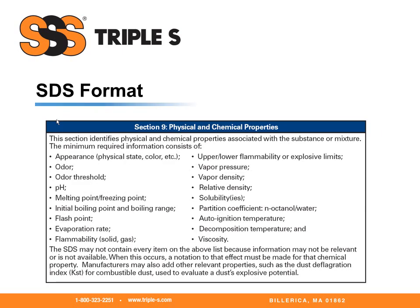Section nine, physical and chemical properties. This section identifies physical and chemical properties associated with the substance or mixture. The minimum required information consists of the appearance, physical state or color, odor, odor threshold, pH, boiling point, flash point, evaporation rate, flammability, vapor pressure, vapor density, solubility, auto-ignition temperature, and viscosity. The safety data sheet may not contain every item on the above list because information may not be relevant or available; when this occurs, a notation to that effect must be made for that chemical property.